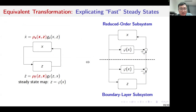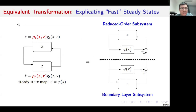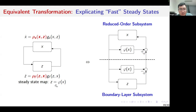Before making assumptions on the stability properties of the subsystems, I'd like to introduce the state transformation. The block diagram shows the interaction between the slow subsystem (the x subsystem) and the fast subsystem (the z subsystem). We already make assumptions on the steady state map of the fast subsystem. If the dynamics of the fast subsystem is so fast that the transient response can be neglected, then we can use the static map phi(x) to approximate the fast subsystem.